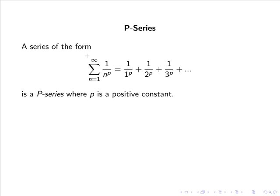A series of the form the sum from 1 to infinity of 1 over n to the power of p, or simply 1 over 1 to the power of p plus 1 over 2 to the power of p plus 1 over 3 to the power of p and so forth, is a P-series where p is a positive constant.